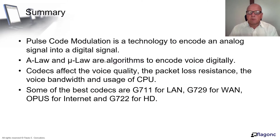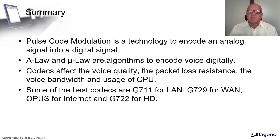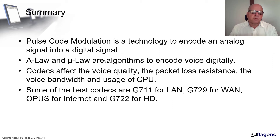In summary: Pulse Code Modulation is a technology to encode an analog signal into a digital signal. A-law and mu-law are algorithms to encode voice digitally. Codecs affect voice quality, packet loss resistance, CPU usage, and voice bandwidth. For choosing a codec: choose G711 for LAN, G729 for WAN (Wide Area Network), Opus for the Internet, and G722 if you want high-definition voice.